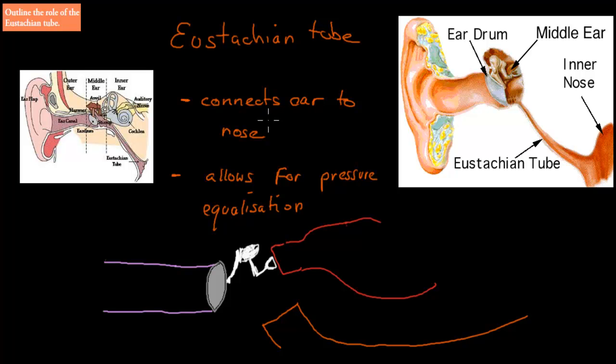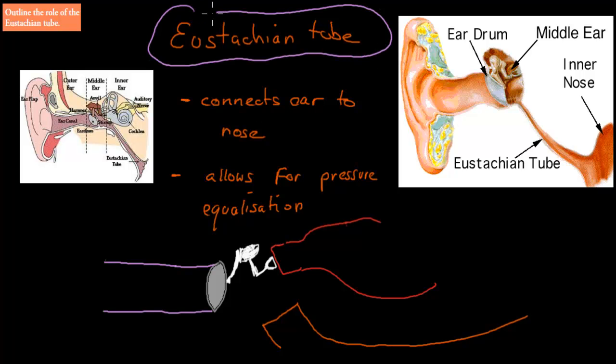In the last couple of videos we talked about parts of the ear — the inner, middle, and the outer ear. But I said that we didn't talk about one part, which was the Eustachian tube. And the Eustachian tube is what we're going to cover in this video.